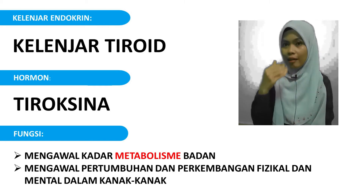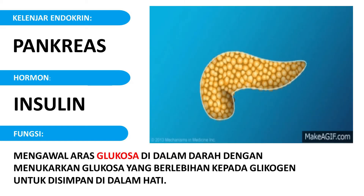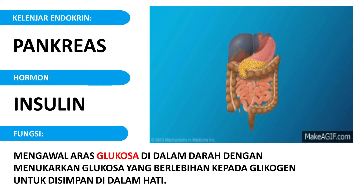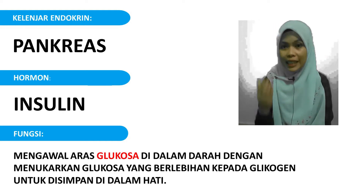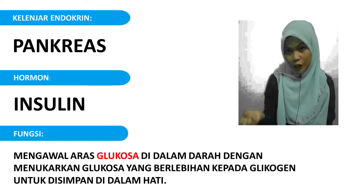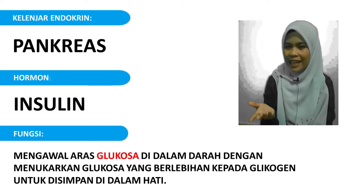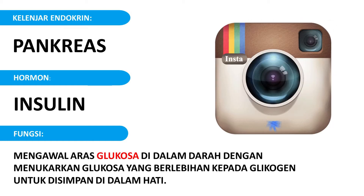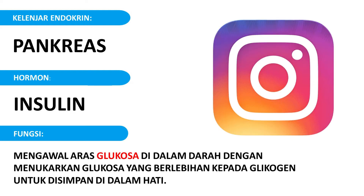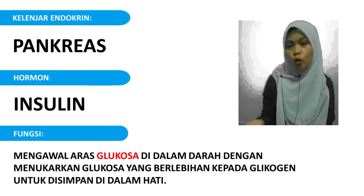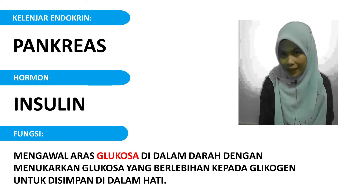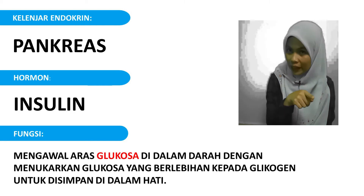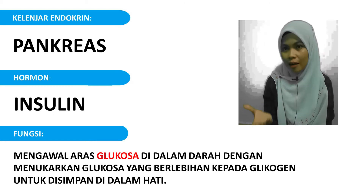Seterusnya kita pergi kepada Pancreas. Pancreas berbentuk daun dan dia menghasilkan hormon insulin. Hormon insulin berkaitan dengan glukosa - awak boleh ingat IG, insulin glukosa. Insulin akan berfungsi untuk mengawal aras glukosa di dalam darah dengan menukarkan glukosa yang berlebihan kepada glaikogen untuk disimpan di dalam hati. Jadi, insulin berkaitan dengan paras glukosa, paras gula dalam darah.